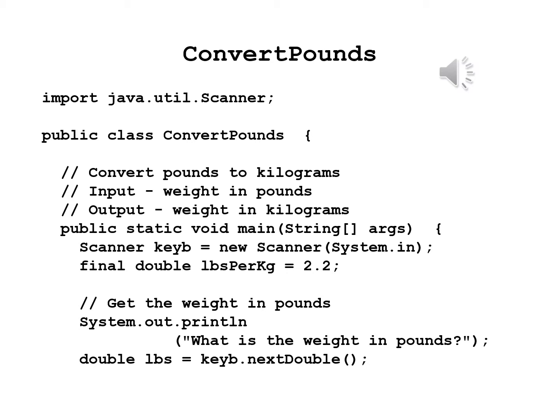We begin the program with import java.util.Scanner. We begin the class with the header public class ConvertPounds, and an open brace for the class. A comment tells us what it does: convert pounds to kilograms; input is weight in pounds, output is weight in kilograms. We begin the main method by writing public static void main with String[] args in parentheses and an open brace.